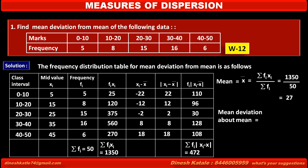Therefore, the mean deviation about the mean is equal to Σfi·|xi − x̄| divided by Σfi, which is equal to 472 divided by 50, which equals 9.44.